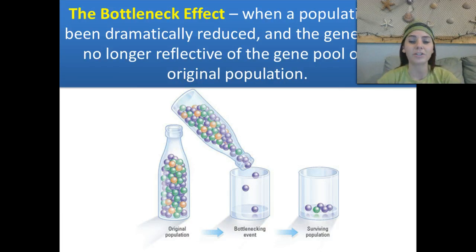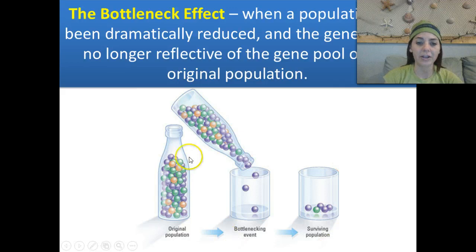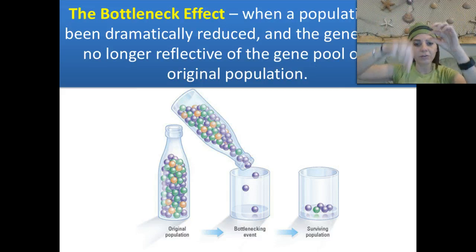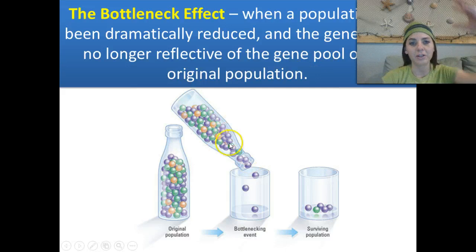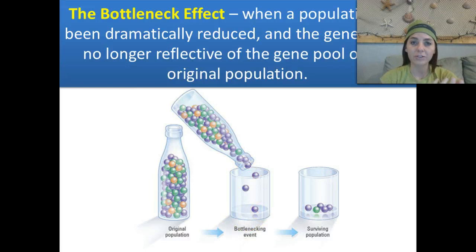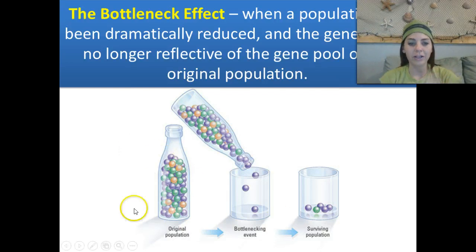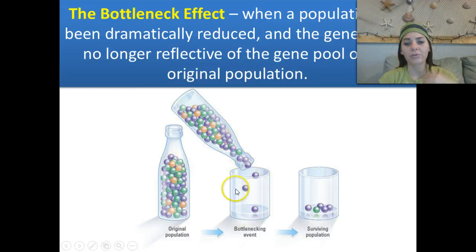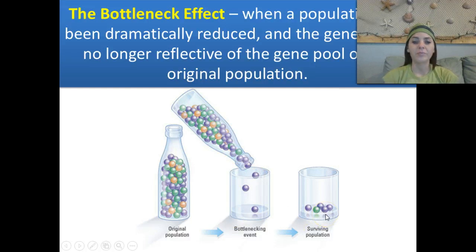The bottleneck effect is when a population has been dramatically reduced and the gene pool is no longer reflective of the original population. We start off with a huge population, and then only a few individuals get through — like a bottle being tipped over, going through a bottleneck. In this example, the original population has green, orange, red, and purple spheres. After the bottleneck, we have three purple spheres, possibly a blue from a recessive trait. As you can see, there are absolutely no red spheres left.